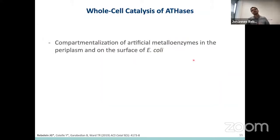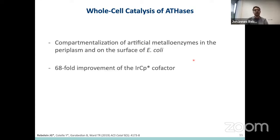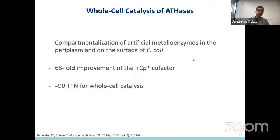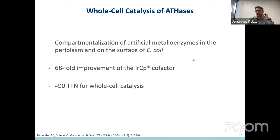To summarize this part: we compartmentalized artificial metalloenzymes in the periplasm and on the surface of E. coli. We improved the previously best published iridium Cp* cofactor by 68-fold and observed a total turnover number of 90 for whole cell catalysis. I know it is not very high for natural enzymes, but as mentioned, the cellular environment usually inactivates the homogeneous catalyst very quickly, so we are quite happy about this number.